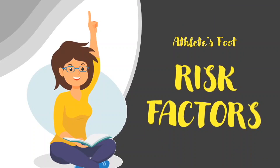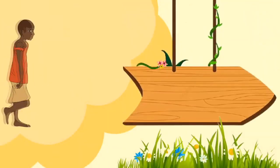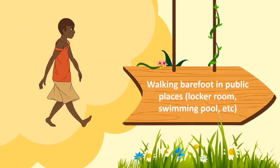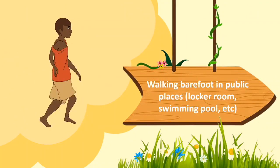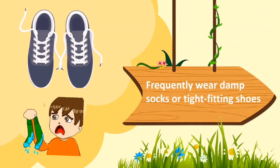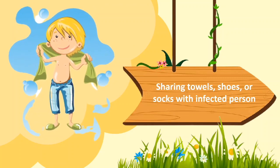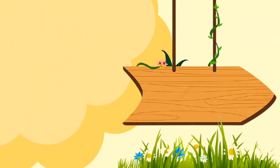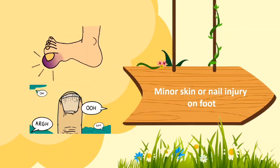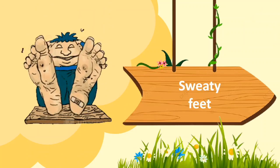Risk factors. Firstly, walking barefoot in public places such as locker rooms and swimming pools increases the risk of athlete's foot. Secondly, frequently wearing damp socks or tight-fitting shoes. Sharing towels, shoes, or socks with an infected person. Next, minor skin or nail injury on the foot is more prone to getting the infection. And lastly, a person with sweaty feet increases the risk of getting the infection.